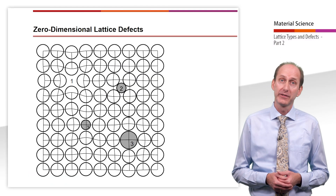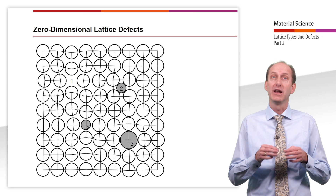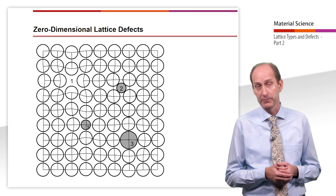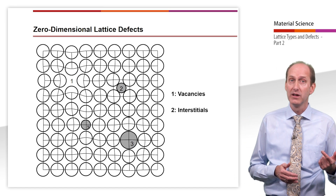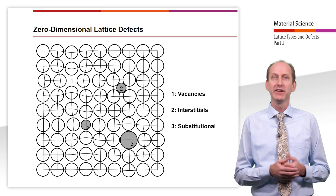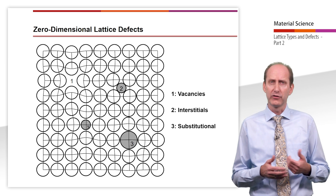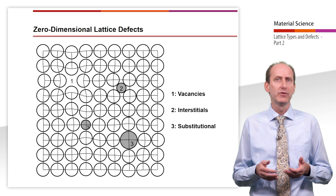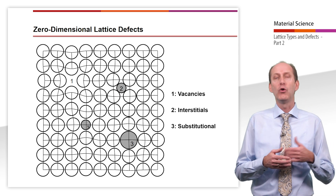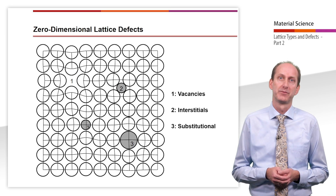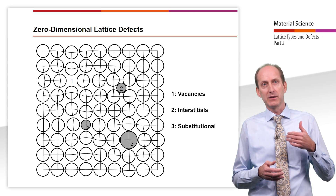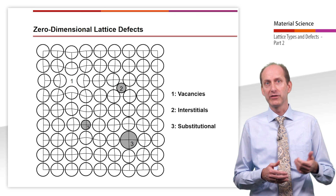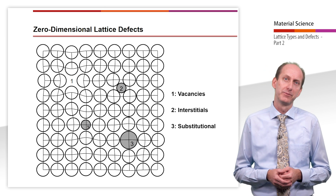Zero-dimensional lattice defects have the dimension of a single atom and are therefore limited to one single lattice point. There are three main types of zero-dimensional lattice defects: vacancies, interstitials and substitutionals. Vacancies are lattice sites where an atom is missing. The concentration of vacancies increases exponentially as the temperature increases up to the melting temperature — by about eight orders of magnitude compared to room temperature. At the melting point, the concentration is so high that around 100 million vacancies per mm² can be found at the lattice plane.